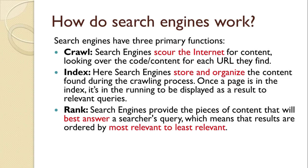Now we'll understand how search engines actually work. Search engines have three primary functions. First is crawl — search engines crawl the internet for content, looking over the code and content for each URL they find. Second is index — search engines store and organize the content found during the crawling process. Once a page is in the index, it's in the running to be displayed as a result to relevant queries. Third is rank — search engines provide the pieces of content that will best answer the searcher's query, which means results are ordered from most relevant to least relevant.